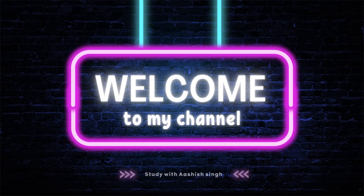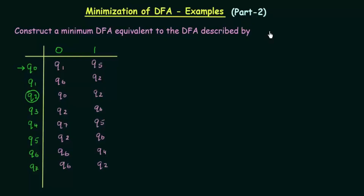Welcome! In the previous lecture I taught you about minimization of DFA and we saw an example with step-by-step instructions to follow in order to minimize a DFA. In this lecture we have another example where we have to construct a minimum DFA equivalent to the DFA described. Here we have a DFA which has 8 states Q0 to Q7, and our task is to design a minimum DFA equivalent to this — that means a DFA that works exactly like this but with the minimum number of states.